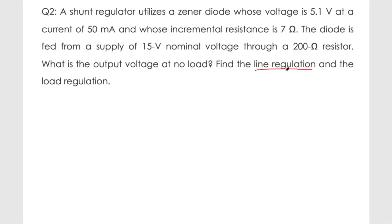Line regulation is defined as how well the regulator is able to regulate against supply variations — it is the change in output voltage for a given change in input voltage. Load regulation is defined as how much the output voltage changes for a given change in load current. We will derive the expressions as we solve the problem.